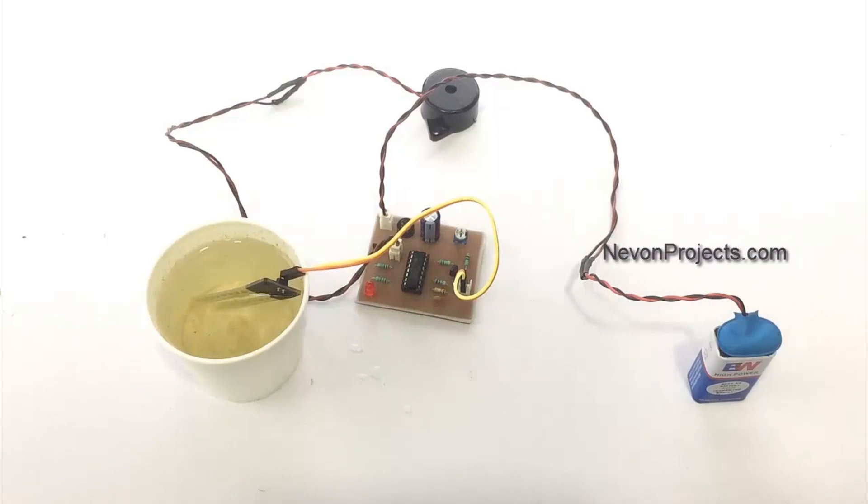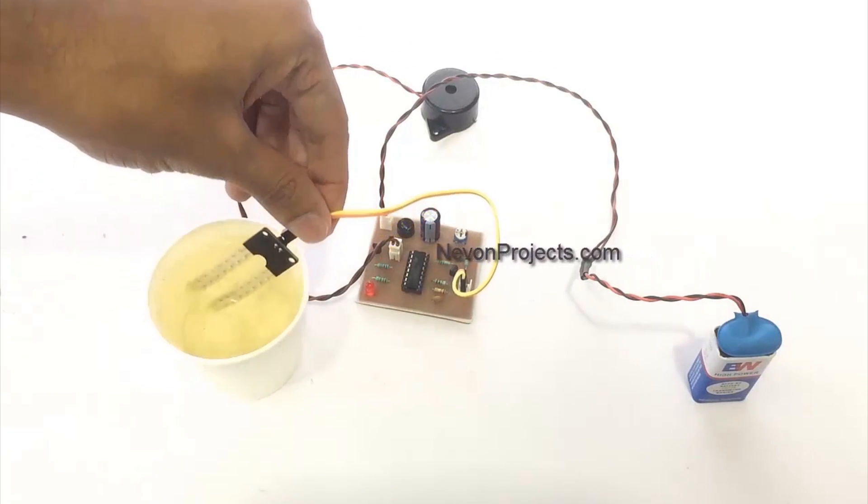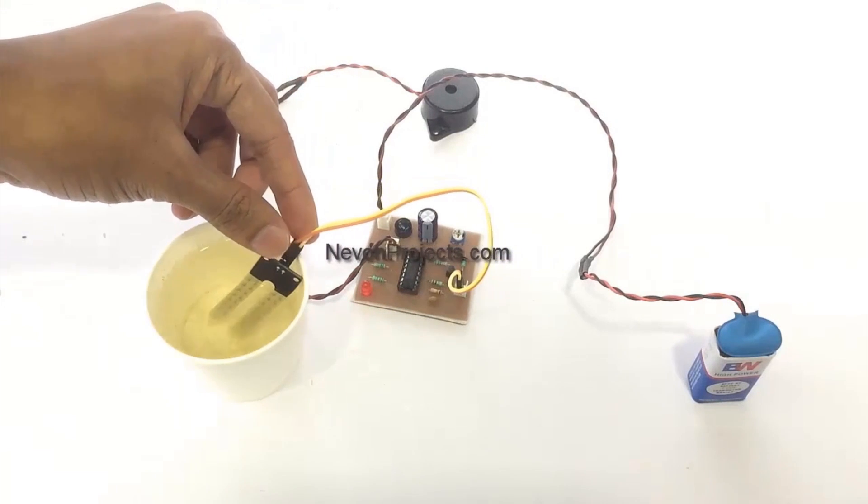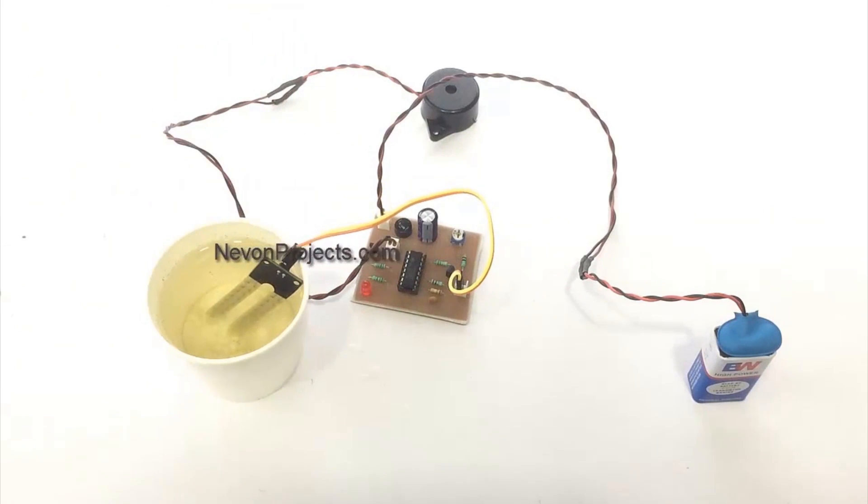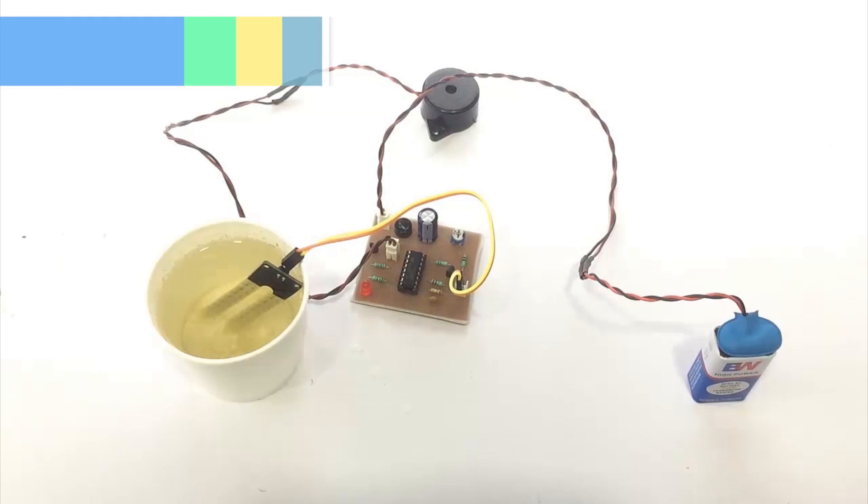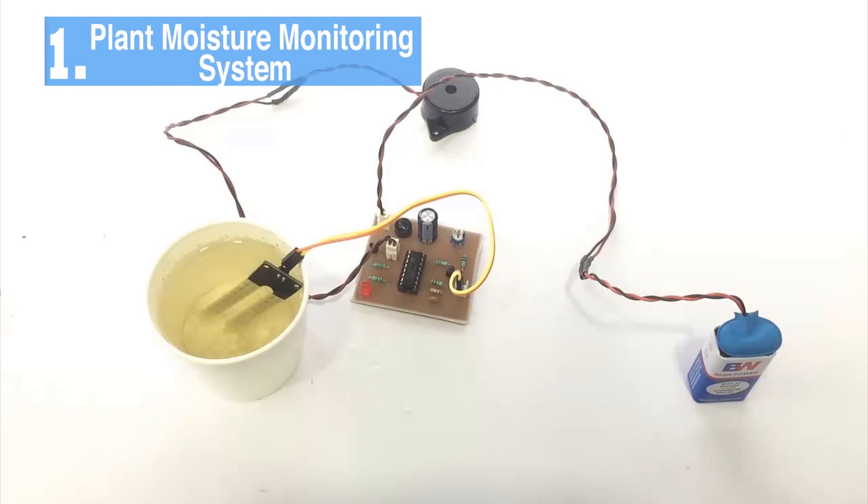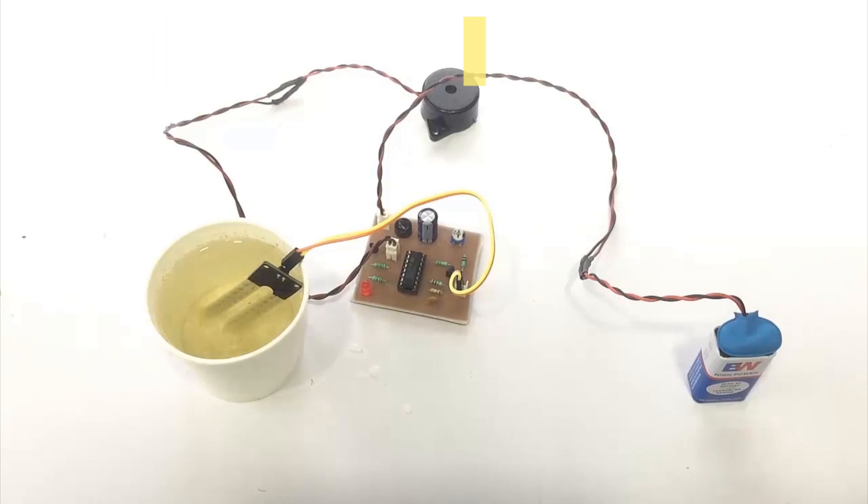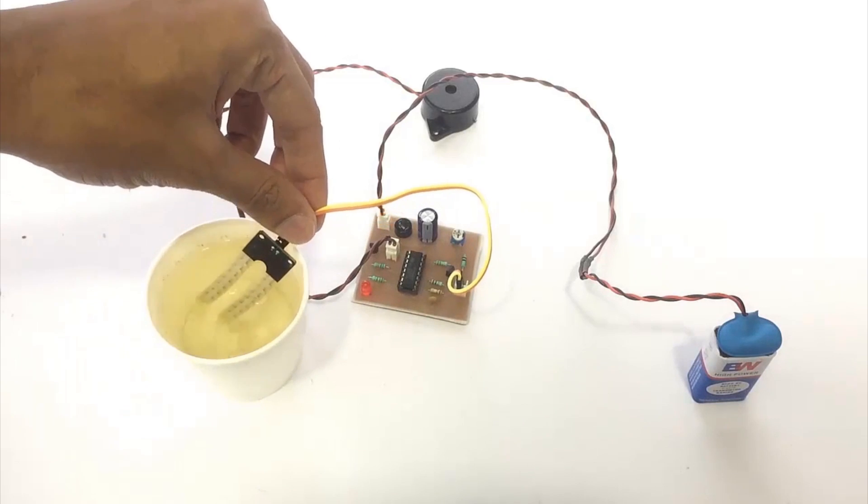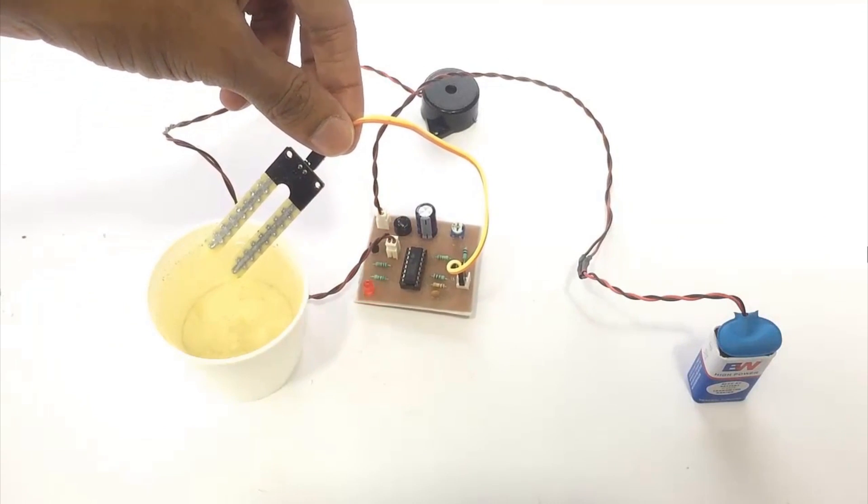In case the moisture goes low, we demonstrate that by removing the sensor out of soil. And in that case, we have an oscillator circuit here which receives the sensor input and based on that input, it triggers the buzzer as well as the LED light to indicate a sound and light alarm. This system is powered by a 9-volt power supply.